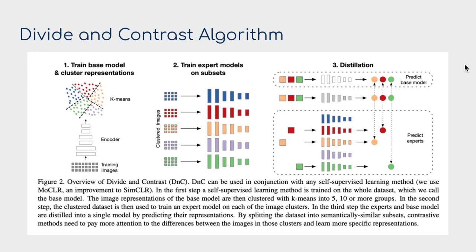This brings us to the Divide and Contrast algorithm for self-supervised learning with heavy-tailed in-the-wild unlabeled data. The first step is to train a base contrastive learning model on all of the data—taking all training images and doing positive-negative encodings through data augmentation in a framework similar to Bootstrap Your Own Latent, resulting in a representation of all the data.